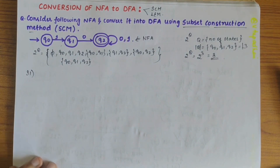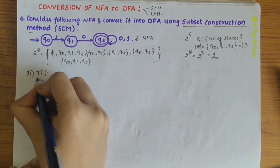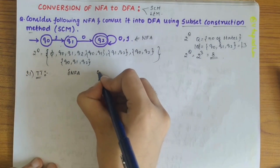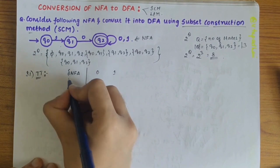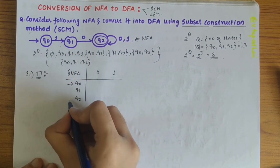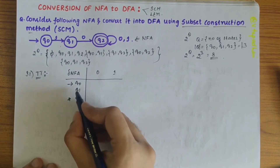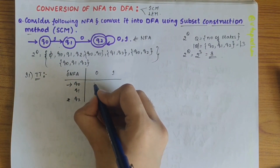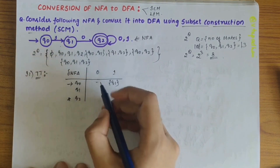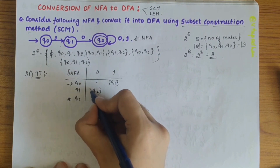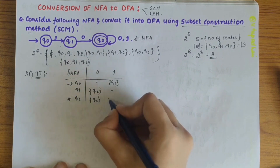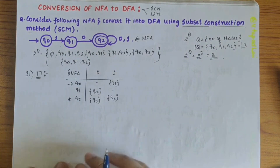Step one is to obtain the transition table for the given NFA. We write the transition function of the NFA with inputs 0 and 1, for states Q0, Q1, and Q2. Q0 is the start state and Q2 is the final state. Q0 on 0 gives nothing — write nil. Q0 on 1 gives Q1. Q1 on 0 gives Q2. Q1 on 1 is undefined. Q2 on 0 gives Q2 itself, and Q2 on 1 also gives Q2 itself. Step one is done.